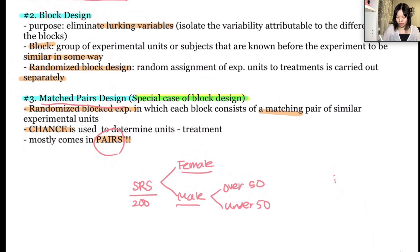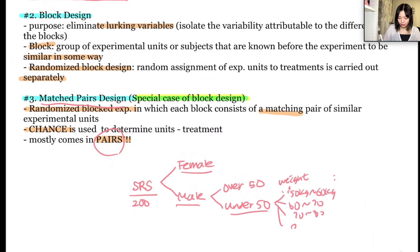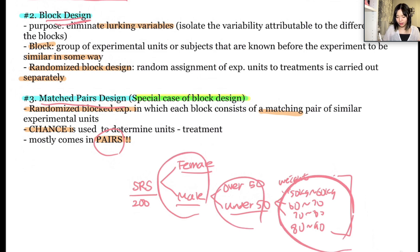The block design could look like this: let's say the researchers divided the male participants who are under 50 based on weight — separating them into groups like 50 to 60 kilograms, 60 to 70, 70 to 80, and 80 to 90. In this case, block design is used here, but you can't say matched pairs design is applied because it does not come in two pairs. This is why we say that matched pairs design is a special case of block design.